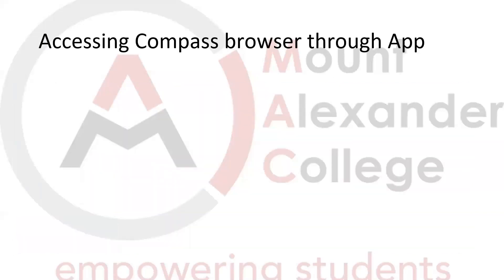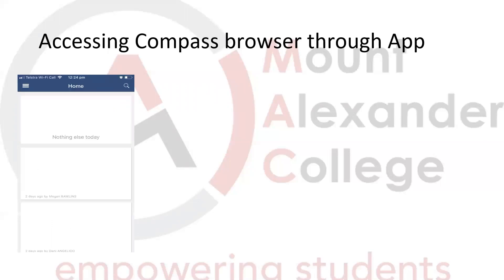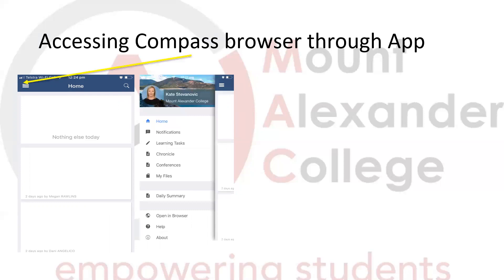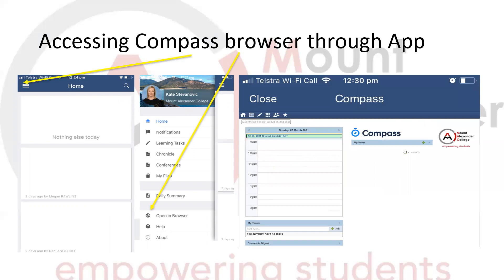To access the Compass browser through the app — there are some functions that work better in browser mode. So you simply click the three lines on the home page. It will slide over and you'll have some options. Towards the bottom is 'Open in Browser'. Click on that and it will bring you to the Compass browser page. The only difference is you will see 'Close' in the top left — when you click close, it will go back into app mode.